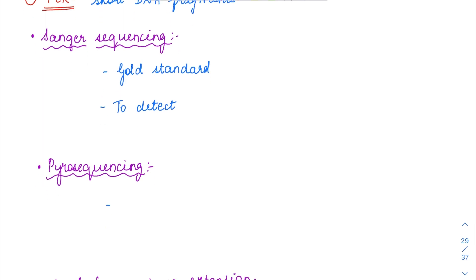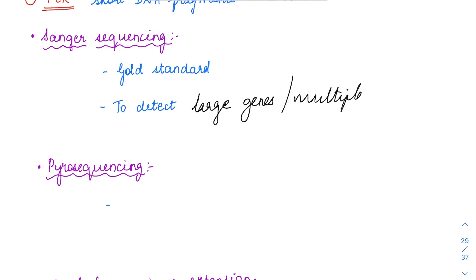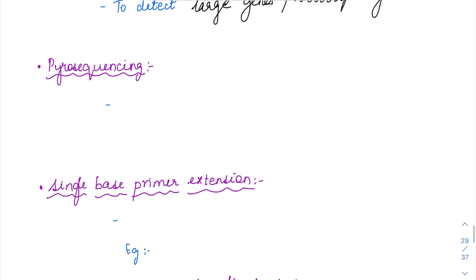So the first one will be Sanger sequencing. It was the very initial method and still it is the gold standard for sequencing. Nowadays, whenever you want to detect any large genes or when you want to detect multiple genes, you can use Sanger sequencing.